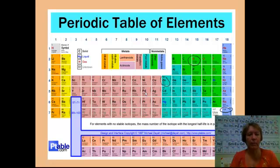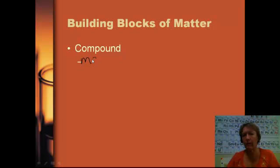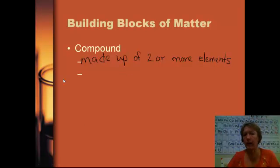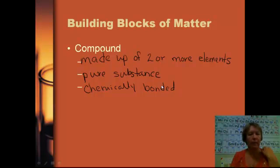Another type of matter is a compound. A compound differs from an element in that a compound is made up of two or more elements. A compound is also a pure substance — we're going to talk about pure substances and mixtures later on. The elements in a compound are bonded together chemically so that they form one entity, one compound.